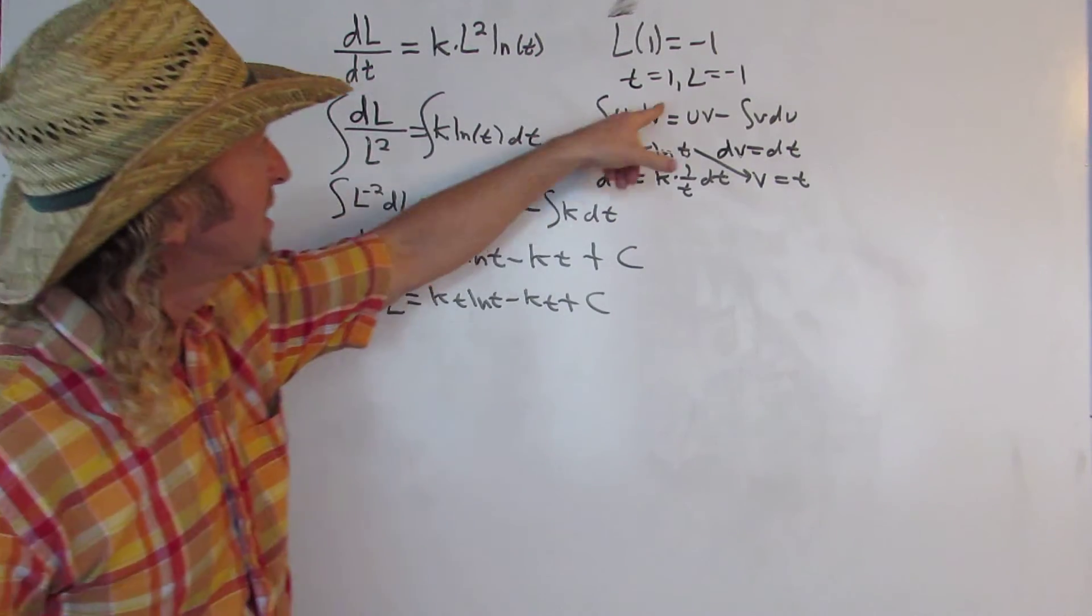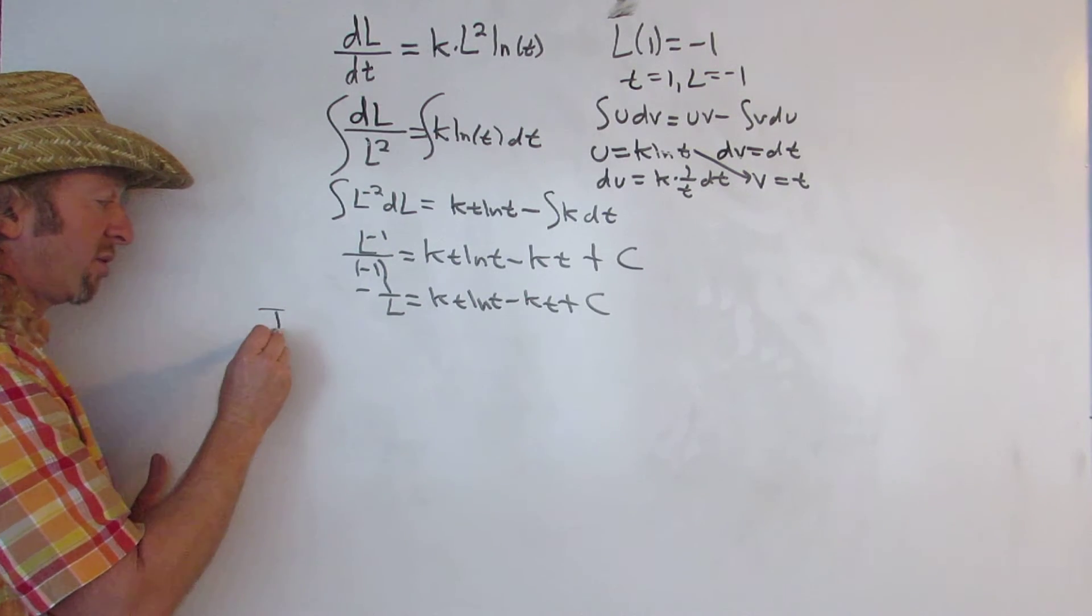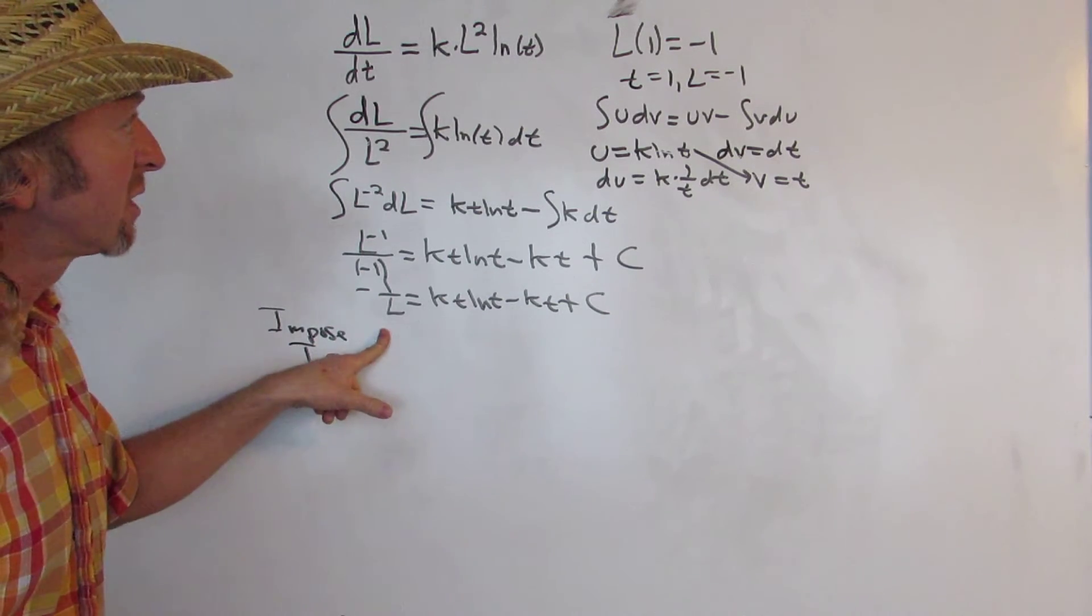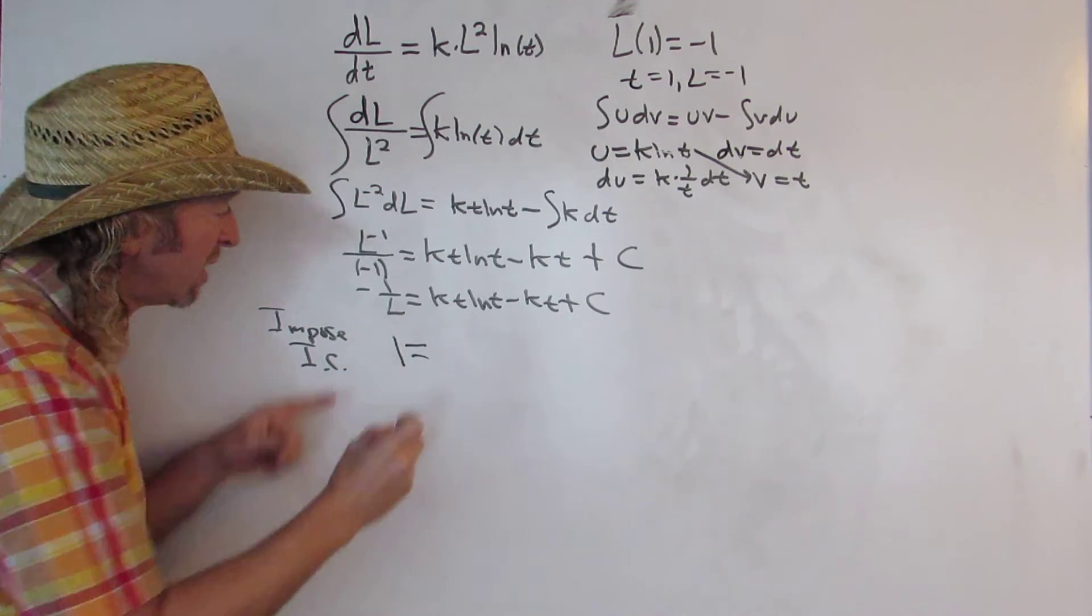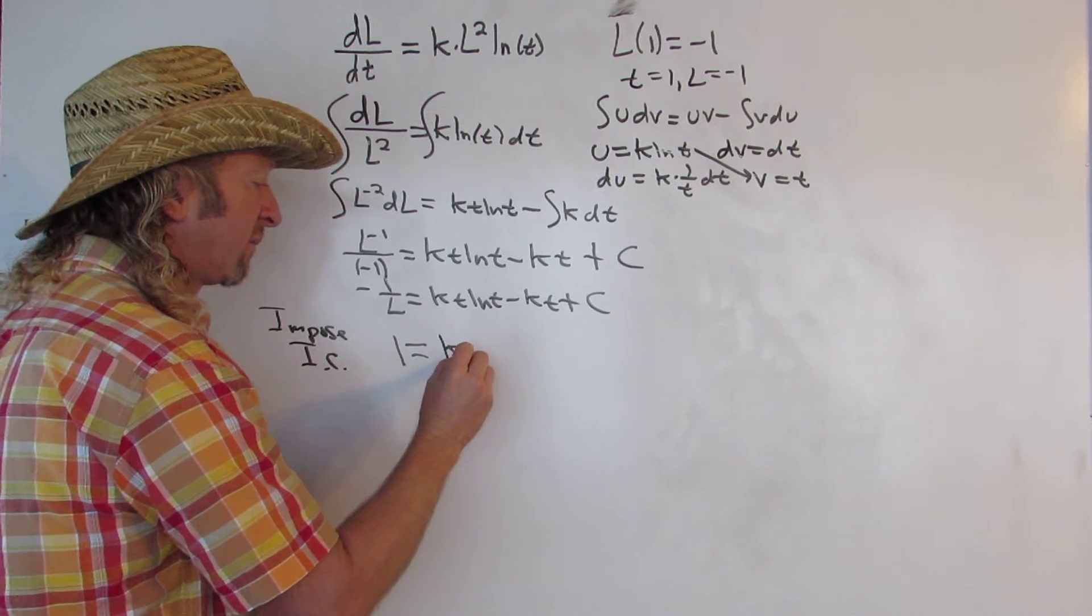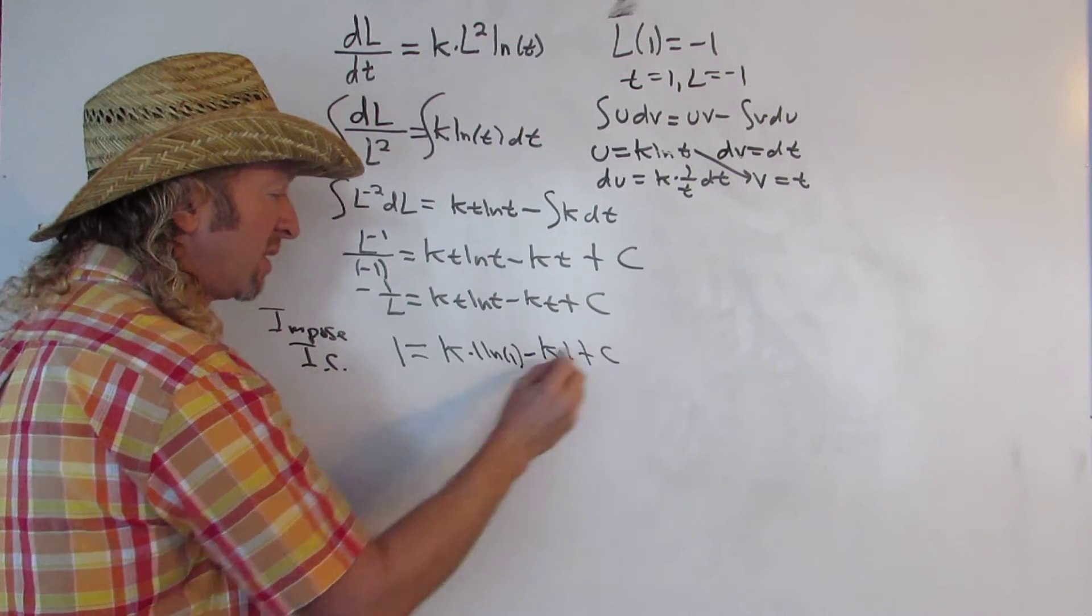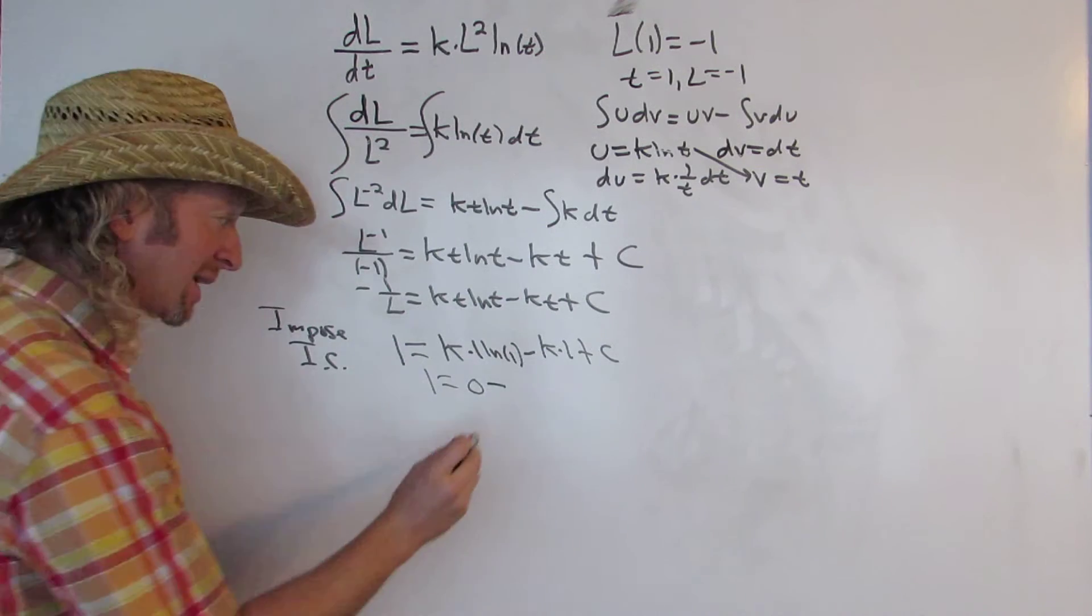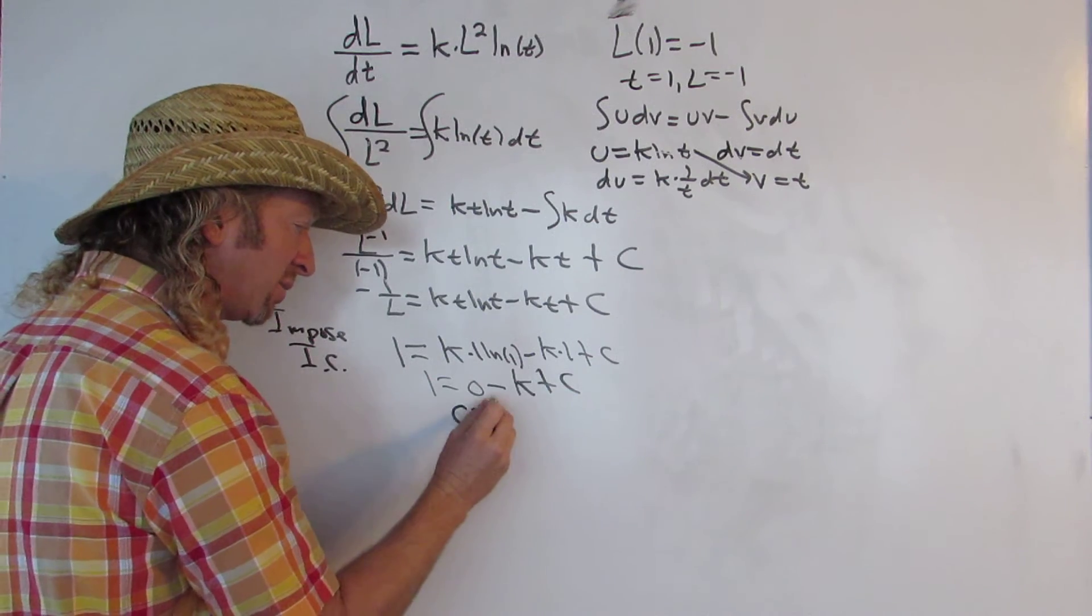The last thing to do is find c. So when t is 1, l is equal to negative 1. So let's use our initial condition. So let's impose the initial condition. Let's do it. So that means l is going to be negative 1, so we get negative 1 over negative 1. Negative 1 over negative 1 is 1. So negative 1 over negative 1 is 1. We get kt, so t is 1, ln 1, well that's great, ln 1 is 0, minus k times 1 plus c. So this is going to be 1 equals, this is 0, minus k. Minus k apparently. I haven't done this problem, so it's kind of a little bit of a shocker. And then you add k, so you get c equals k plus 1.